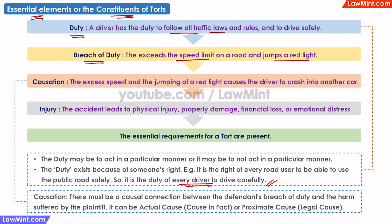Following the breach, there must be causation. Causation means that there must be a cause and effect relationship between the breach of duty and a damage or injury suffered by the plaintiff. In our example, the driver's excess speed and the jumping of the red light caused the driver to crash into the plaintiff's car.